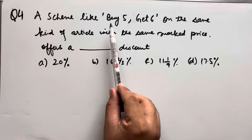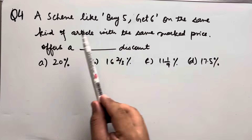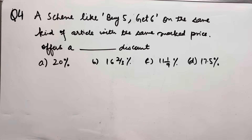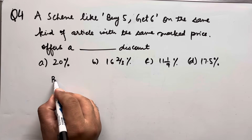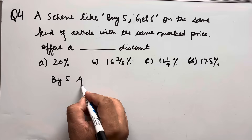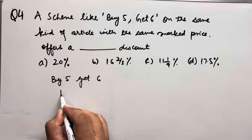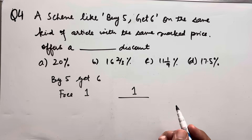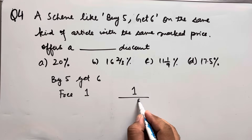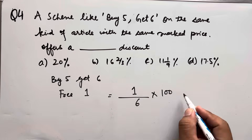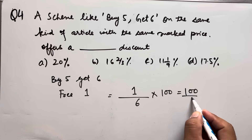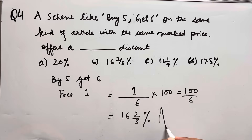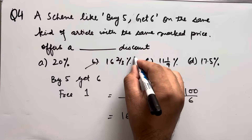Question number 4: a scheme 'buy 5 get 6' on articles with the same marked price offers what percentage discount? We purchased 5 and get 6, so 1 article is free. The discount is 1/6 × 100 = 100/6 = 16⅔%. Option B is the correct answer.